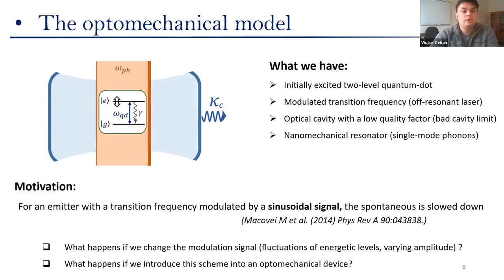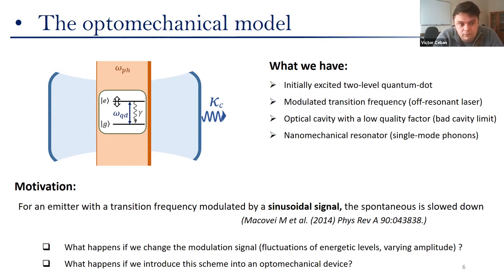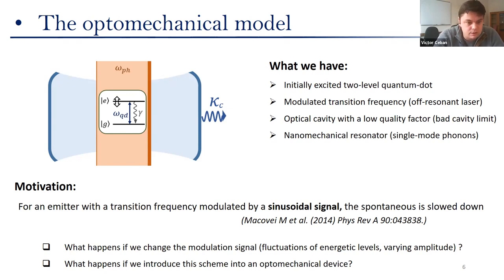Why do we do that? Because we know that for the case of a single atom with a modulated transition frequency placed in a bad cavity — a cavity with a low quality factor — we achieve spontaneous emission control and it decays more slowly. This happens when the transition modulation signal is a pure sinusoidal signal. One of the first questions we investigate here is what happens when we consider different modulation signals, not only pure sinusoidal ones. Another question is what happens when we introduce the optomechanical part to this spontaneous emission control scheme.